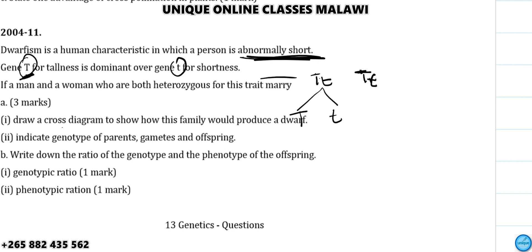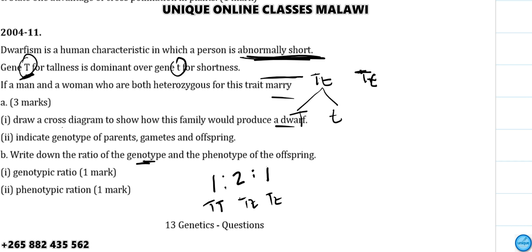The offspring: each parent contributes one allele and they combine in the cross. Write down the ratio for the offspring from this cross. The ratio is one to one — it's a phenotype ratio of one to one. The genotype ratio is also one to one, where you have TT versus Tt genotypes.